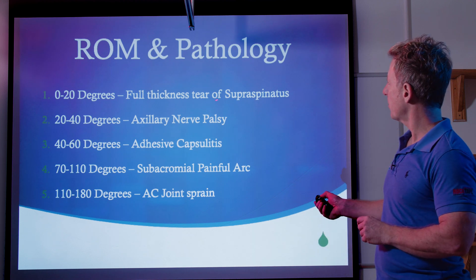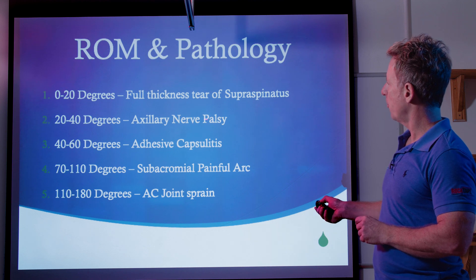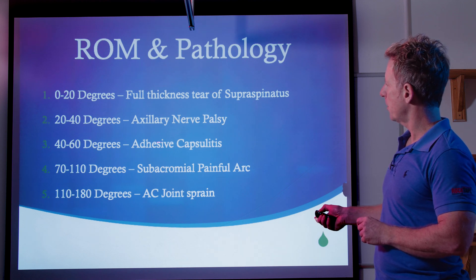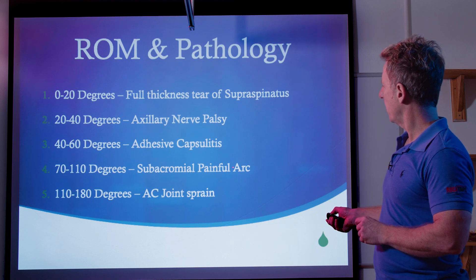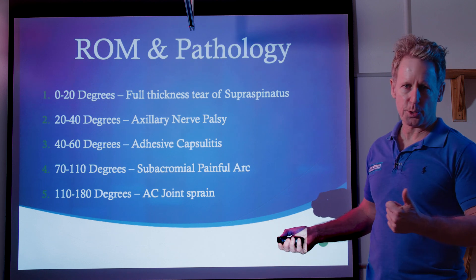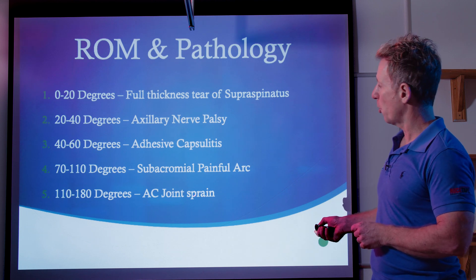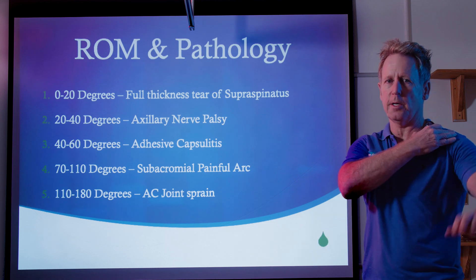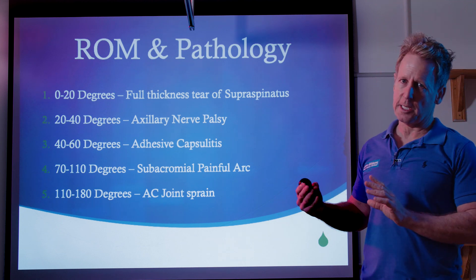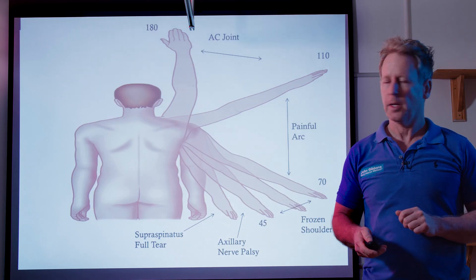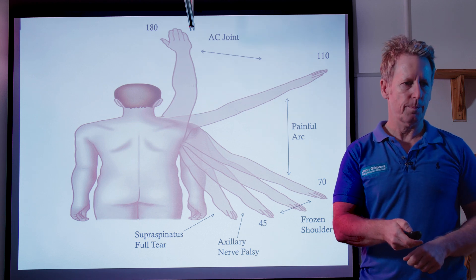To summarize: from 0 to 20 degrees, a full thickness tear of the supraspinatus causing inability to abduct; axillary nerve palsy in varying degrees; adhesive capsulitis; 70 to 110 degrees, subacromial pain from the supraspinatus or the bursa. Pain beyond that could be AC joint or supraspinatus impingement towards end range. Sometimes it's not easy to work out exactly what's going on.